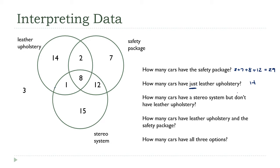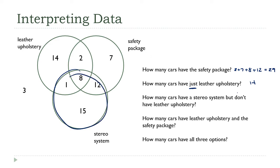Now we're getting more complicated. How many cars have a stereo system but no leather? The stereo system circle covers all of those cars, but we don't want the leather upholstery cars, so we cross out all the leather ones. How many cars are left? That's 15 plus 12, which is 27.